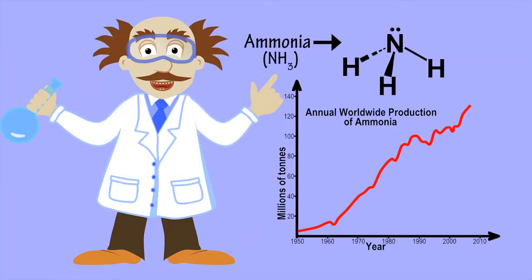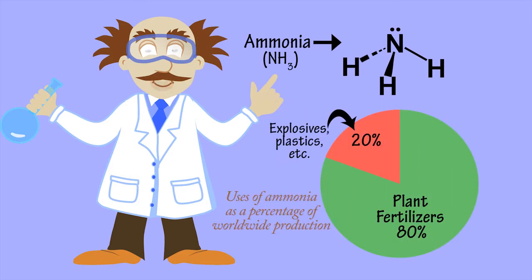Ammonia is one of the most abundant chemicals produced on an industrial scale, with almost 80% of worldwide production being used in plant fertilizers that help grow the world's food crops.